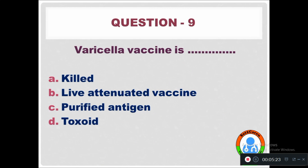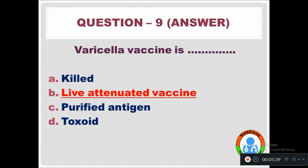Question 9: Varicella vaccine is — Option A: Killed. Option B: Live attenuated vaccine. Option C: Purified antigen. Option D: Toxoid. The right answer is that varicella vaccine is a live attenuated vaccine.